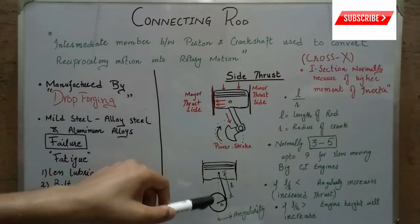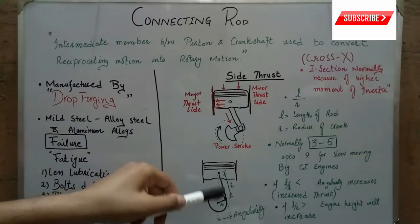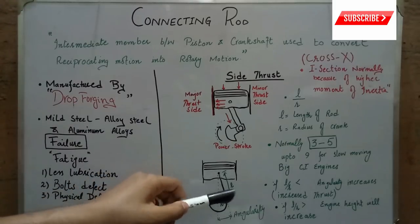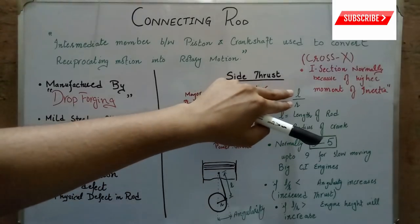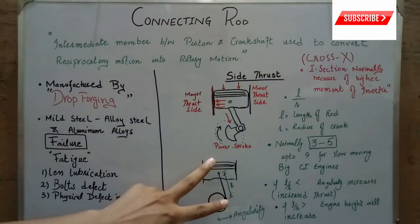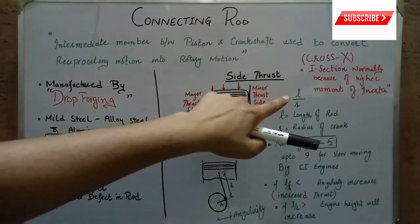For constant crank radius, if the length of the connecting rod is increasing, then the L over R ratio will increase. If the length of the connecting rod is decreasing, the L over R ratio will decrease.